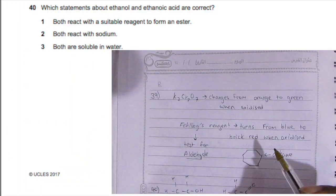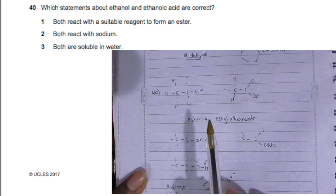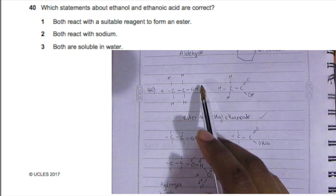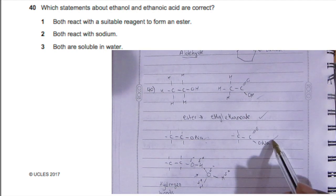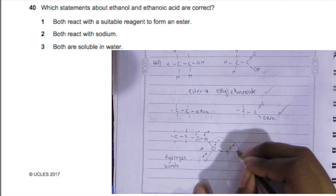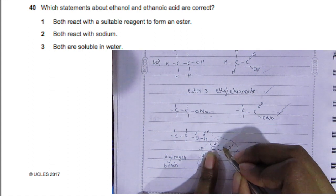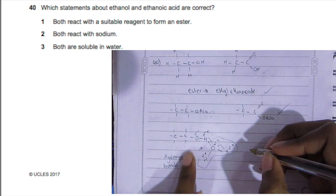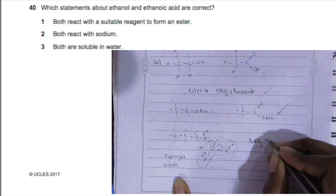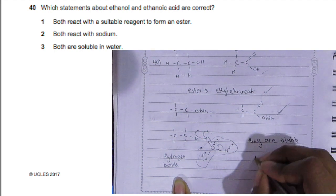Question 40: Which statements about ethanol and ethanoic acid are correct? Both react with a suitable reagent to form an ester—correct, they react with concentrated sulfuric acid to form ethyl ethanoate. Both react with sodium—correct, the hydrogen leaves and is substituted by sodium. Both are soluble in water—also true because they form hydrogen bonds with water molecules. Oxygen is more electronegative, so electrons move closer to oxygen, forming a difference in charge and creating hydrogen bonds. All three options are correct, so A is your answer.